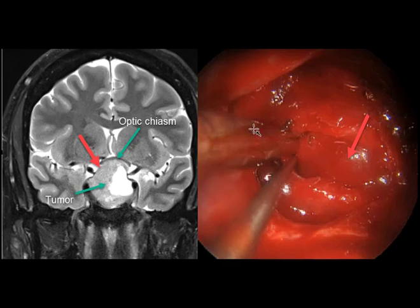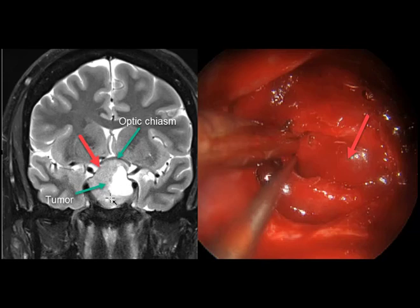This is an endoscopic view here. The tumor has been removed, and this is a membrane called the diaphragm. The membrane sits on top of the tumor, and once the tumor is removed, it descends into the field of view. For a large tumor like this, it's important to be able to look around the crevices within the sella at any persistent tumor. It's very difficult to do this with the microscopic approach.